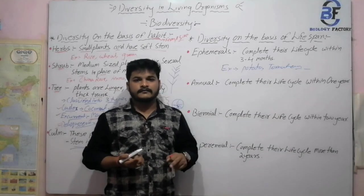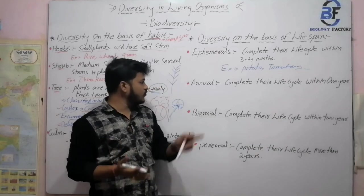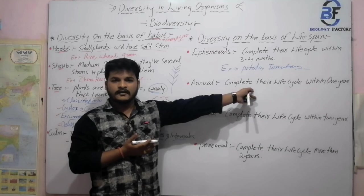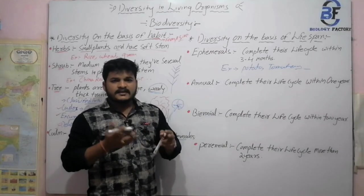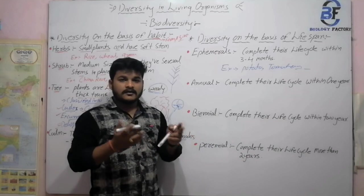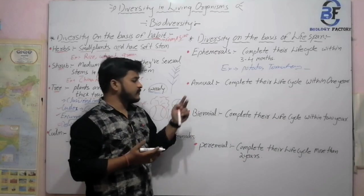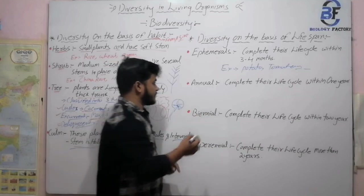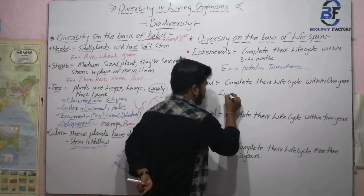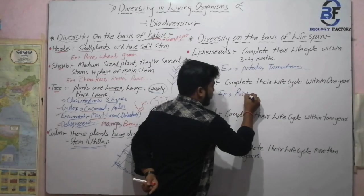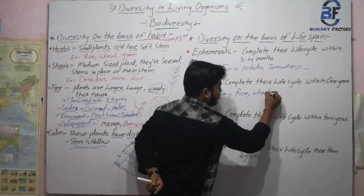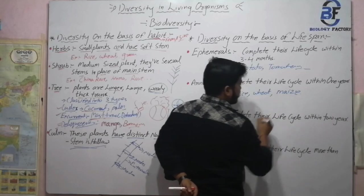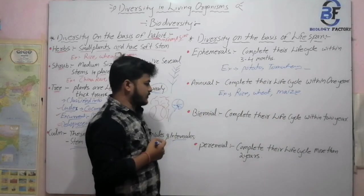Annual means the plants complete their lifespan within one year. The basic examples of annual plants are rice, wheat, and maize. These grains are commonly cultivated and complete their life cycle within one year.